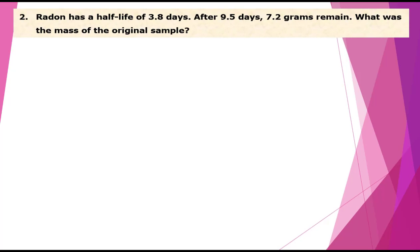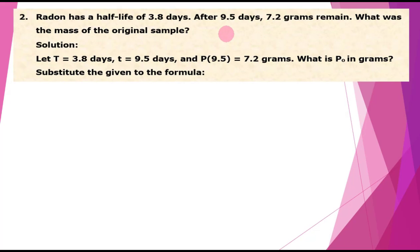Number 2. Radon has a half-life of 3.8 days. After 9.5 days, 7.2 grams remain. What was the mass of the original sample? Solution. Let capital T equals 3.8 days, small t equals 9.5 days, and P(9.5) equals 7.2 grams. What is P(0) in grams?